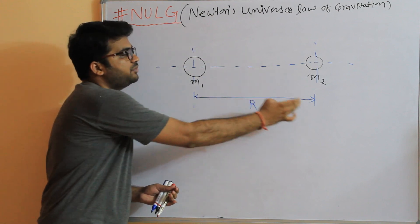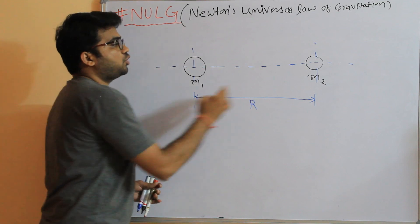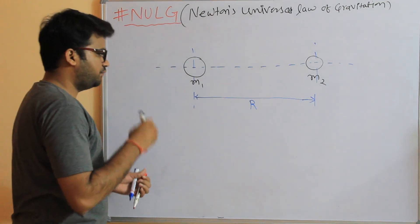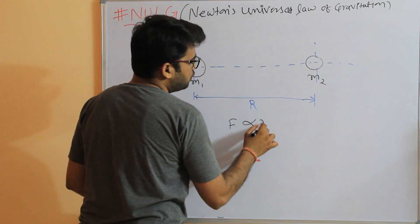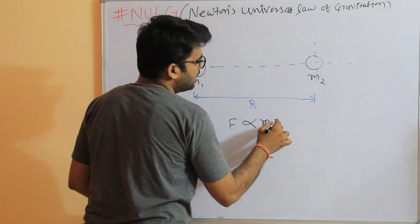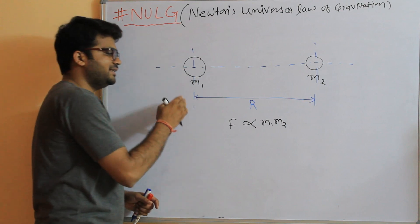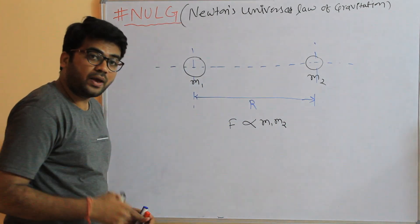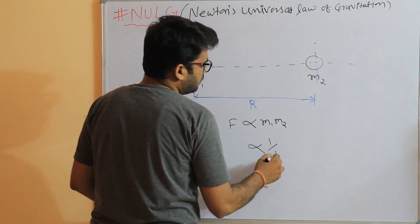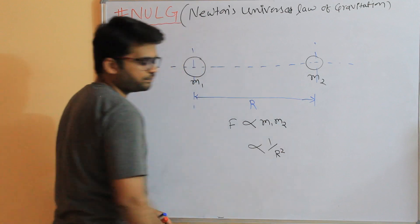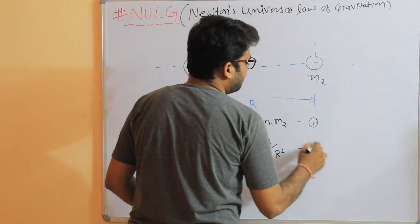The force of attraction between these two masses is directly proportional to the product of their masses, that is M1 and M2. The second statement is: it is inversely proportional to the square of the distance between them. This is called the inverse square law.